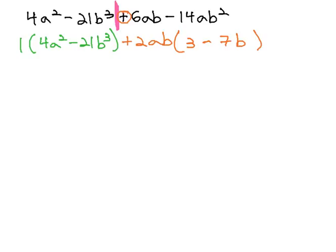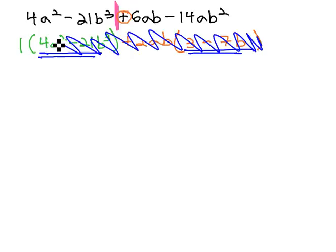Our goal, as we factor by grouping, is to find matching binomials. However, you'll notice that these binomials not only don't match, they're not even close. In this case, we cannot continue from here factoring. We need to readjust and rethink our strategy.